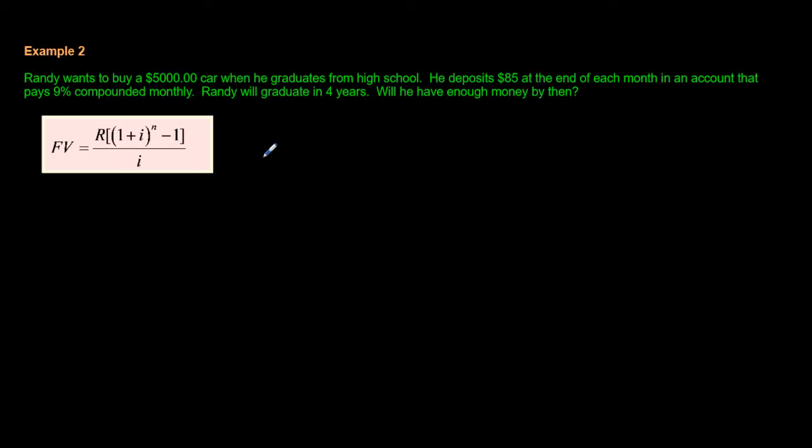Randy wants to buy a $5,000 car when he graduates from high school. This sounds a little different, this question. He wants to buy this car in the future. He deposits $85 at the end of each month in an account that pays 9% compounded monthly. Randy will graduate in four years. Will he have enough money by then? So we're just going to see if he has enough for this $5,000 car. We don't actually need the $5,000 in this question. So we're just going to compare the price later and see if we have enough money. Let's quickly find, well, we know what R is. I don't need to write that. It's $85, right? Everybody can see that.